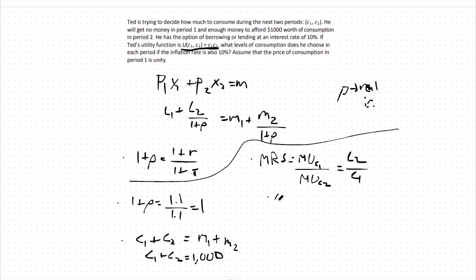We can equate c2 over c1 to our price ratio, which will be 1, the price of good 1, over 1, over 1 plus rho, the price of good 2. When we multiply this out, it ends up being equal to 1 plus rho.